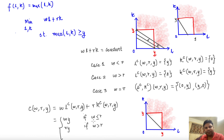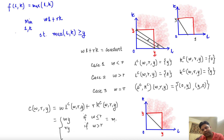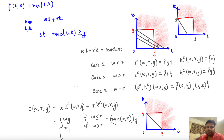To write the cost function in a more compact way, we can use the min operator. Whenever w is smaller than r it is wy; whenever w is greater than r it is ry. So the cost function is simply C(w,r,y) = min(w,r)·y. This is the cost function associated with the production function f(l,k) = max(l,k). Thank you.